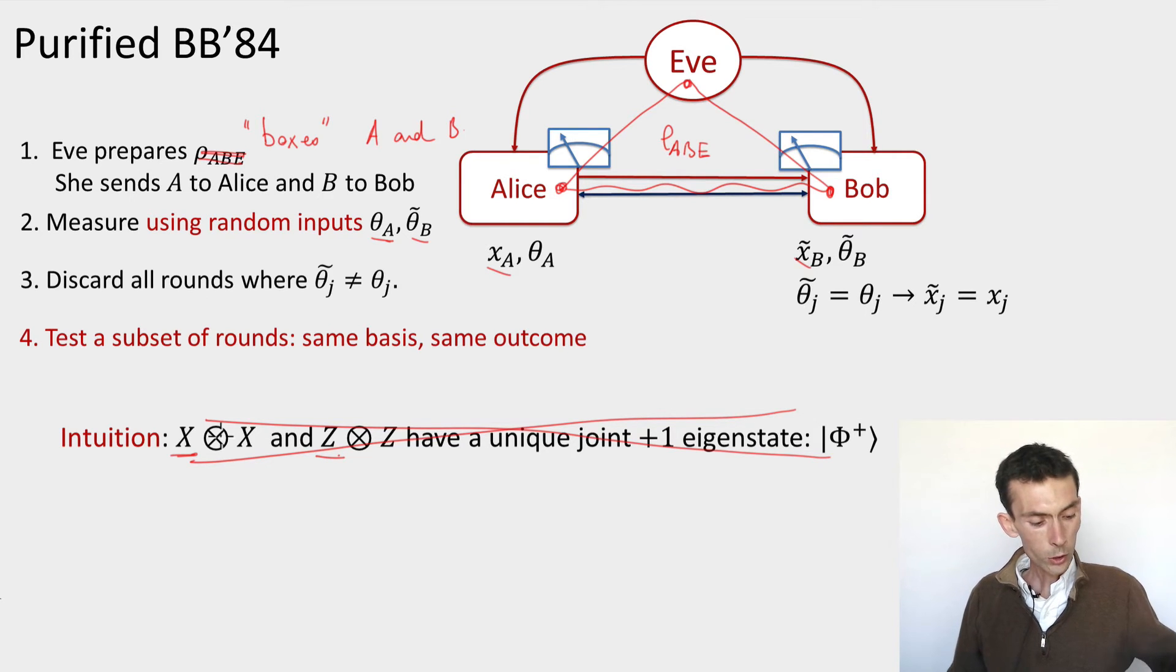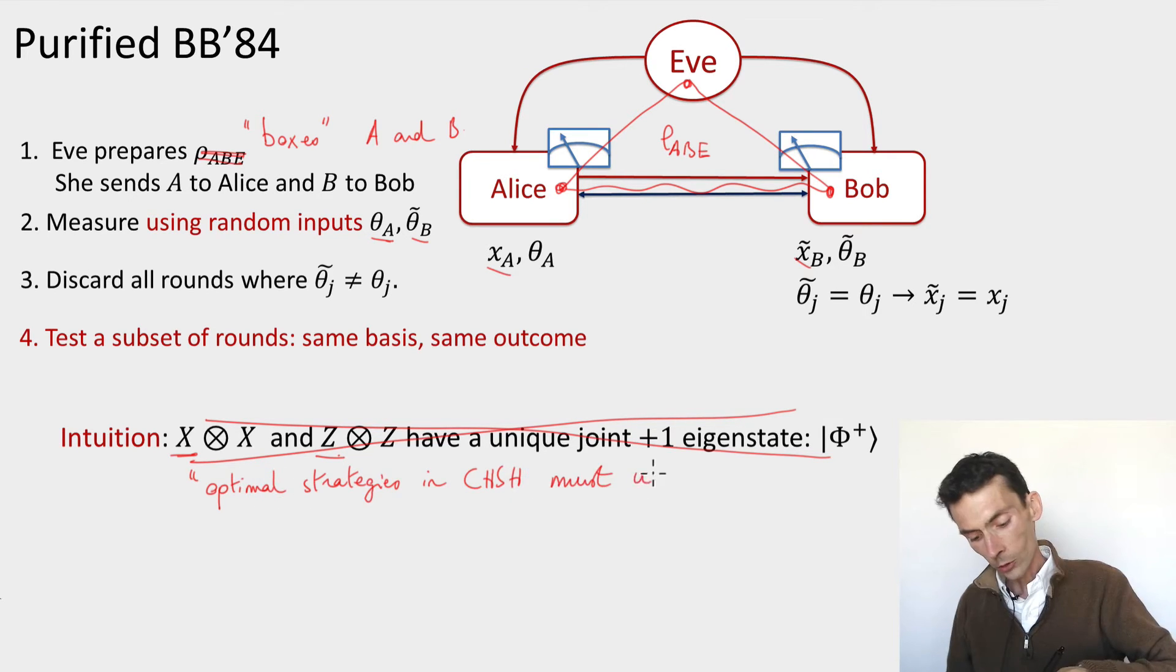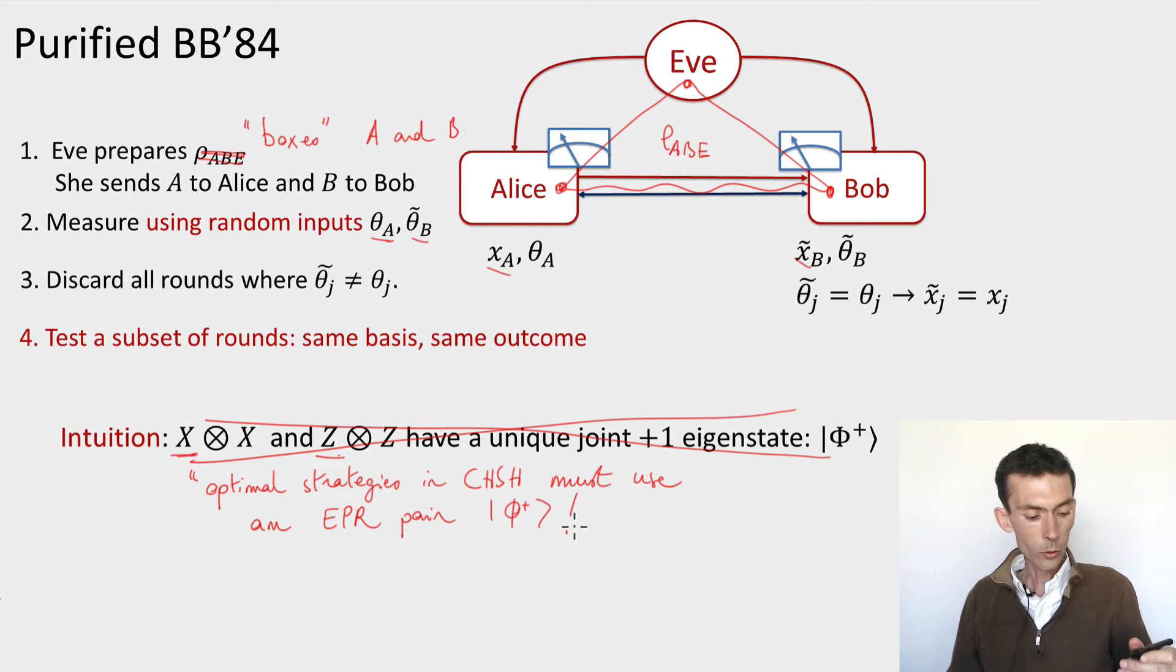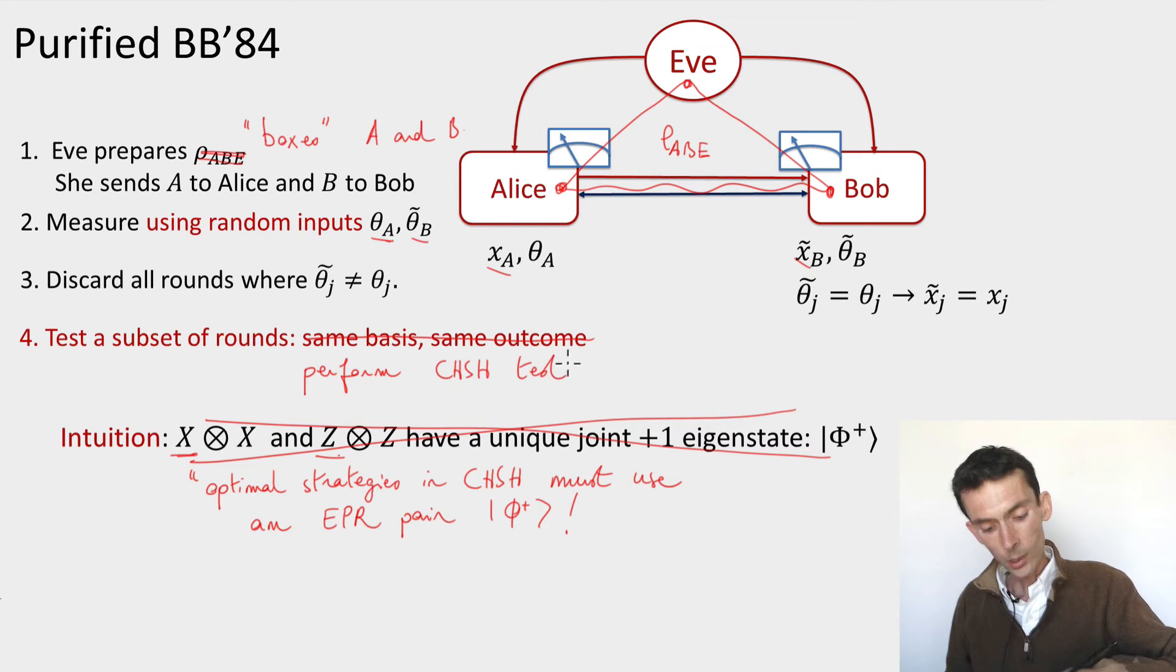Now our goal is still the same. Our goal is to test that whatever this state is that's shared between the parties Alice and Bob is an EPR pair or close to an EPR pair. We just saw a way to do that by using the CHSH test. So our new intuition now is going to be optimal strategies that achieve the maximum winning probability in the CHSH game must use an EPR pair. This is what we want to use. And in order to be able to use it, we need to change the tests that we're making. Instead of just checking that if the basis was the same, the outcome is the same, I don't know what the basis is anyways.